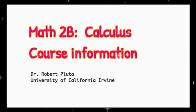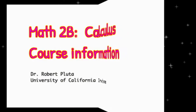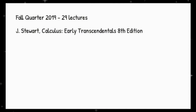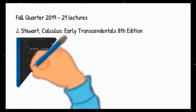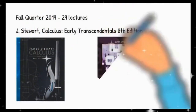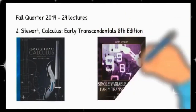This is Math 2B Calculus, Fall quarter 2019. In the fall quarter of 2019, there will be 29 lectures. Lectures will be based on Stuart's Calculus, Early Transcendentals, 8th edition. There are two options: we can use either the full text or the UCI custom edition of the textbook, but it should be the 8th edition.